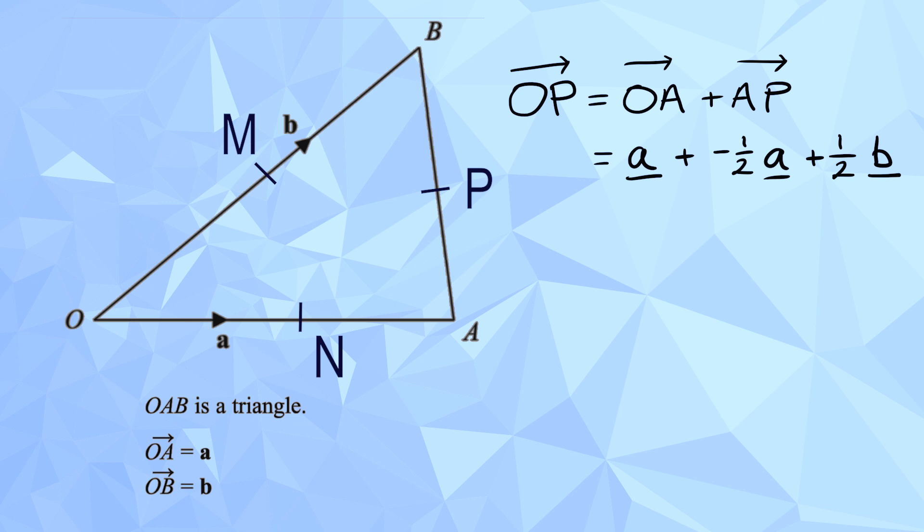And we can simplify that a bit. So, the a add negative half a. Well, if you're adding a negative half a, that's really just the same as taking away half a. So, we've got a minus half a, and then add half b. Well, a minus half a, that's just half a. So, we end up with half a add half b.